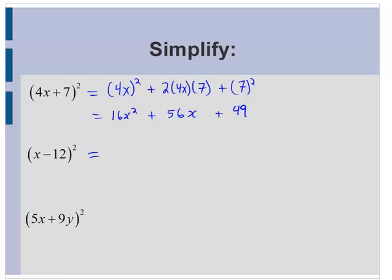x minus 12 squared would be x squared, which is just x squared, minus 2 times x times 12. So 24x plus 12 squared, 144. So x squared minus 24x plus 144.